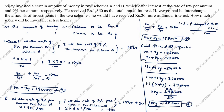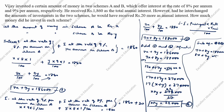Next, subtract equation 1 from equation 2, taking the bigger number first: 9X + 8Y = 188000 minus 8X + 9Y = 186000 gives X − Y = 2000. So X − Y = 2000. This is the fourth equation.